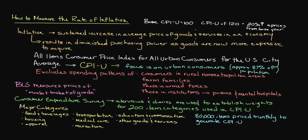Although the CPIU is the broadest and most comprehensive indicator of consumer prices, some prefer to use the all items less food and energy index. This index strips out food and energy prices, which are relatively volatile compared to the other items tracked by the index. This allows users to focus on what is viewed as the primary drivers of inflation.